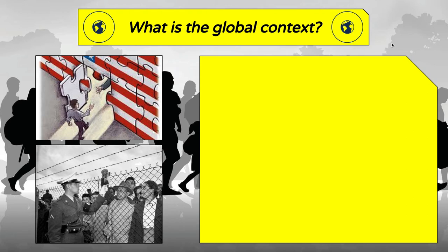Our first left side question today is going to be: what is the global context? By context, what we mean is, what is the global situation with immigration? We live in the United States and we watch the news. We know immigration is getting talked about a lot, but it's not just about how it affects the United States — it's also getting talked about around the world. So let's talk about that a little bit.